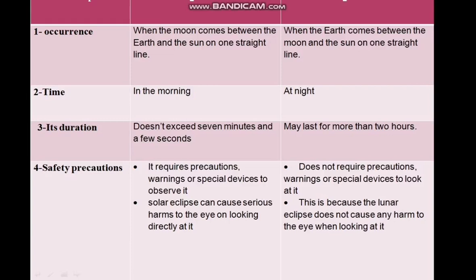Comparing Solar and Lunar Eclipses: in a Solar Eclipse, the Moon comes between the Earth and the Sun, meaning the Moon is in the middle; but in a Lunar Eclipse, the Earth is in the middle. A Solar Eclipse occurs in the morning, but a Lunar Eclipse occurs at night. A Solar Eclipse doesn't exceed 7 minutes and a few seconds, but a Lunar Eclipse lasts for more than 2 hours. Solar Eclipses require precautions because the Sun emits harmful rays, but Lunar Eclipses do not require precautions or special devices.